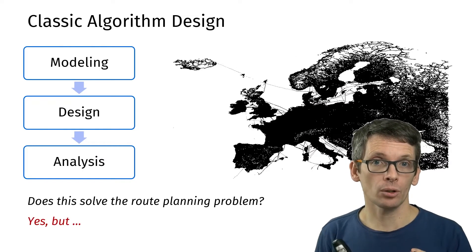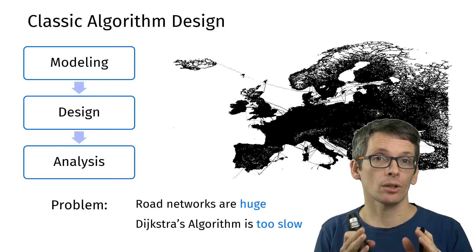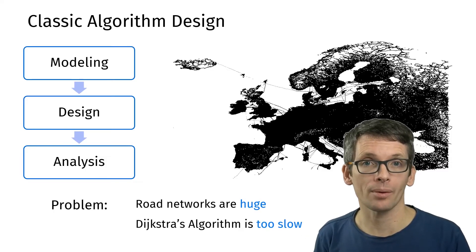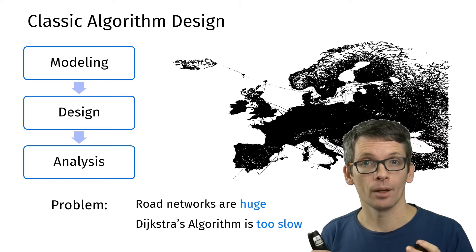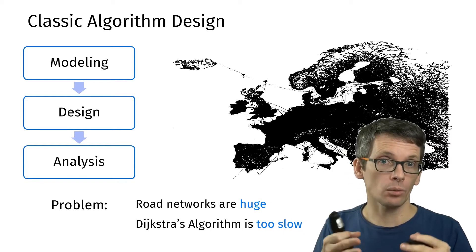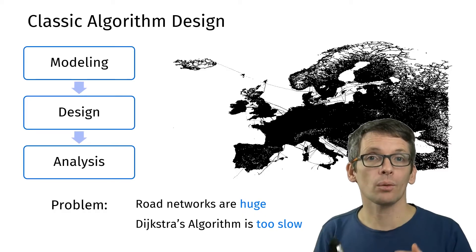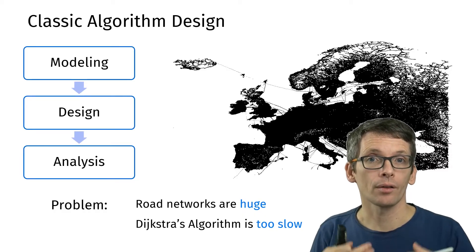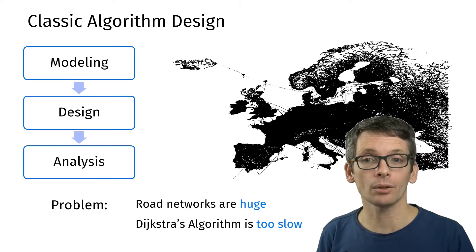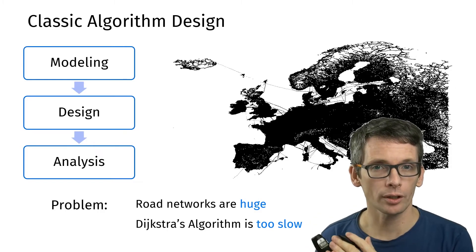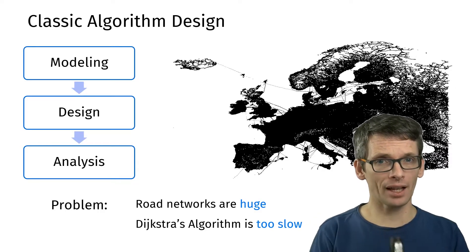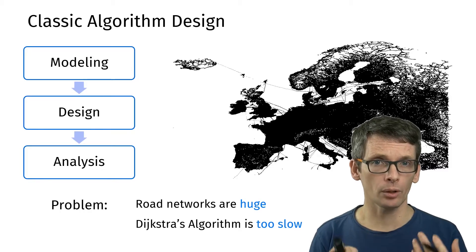Yes, but let's look at some actual data. For instance here we have a road network of Europe and it's simply huge. So yes we can run Dijkstra's algorithm on this road network, but it will not be quite fast enough for the query time that we would like to have. We have an efficient shortest path algorithm, but it's not fast enough for the application we have in mind. What can we do?